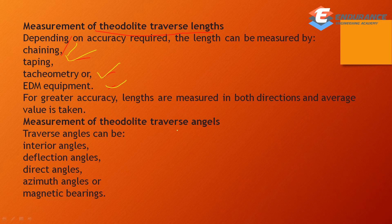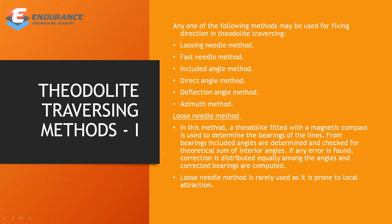For measurement of theodolite traverse angles, traverse angles include interior angles, deflection angles, and direct angles. In the first method, a theodolite fitted with a magnetic compass is used to determine the bearings of the line. The theodolite is attached to the magnetic compass to determine the bearing.